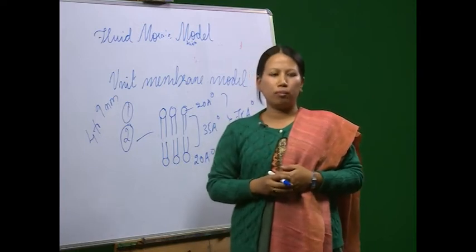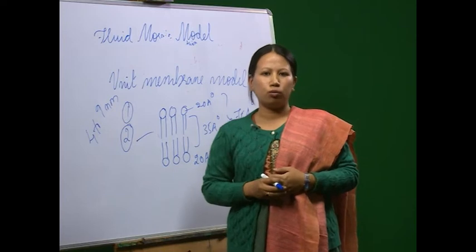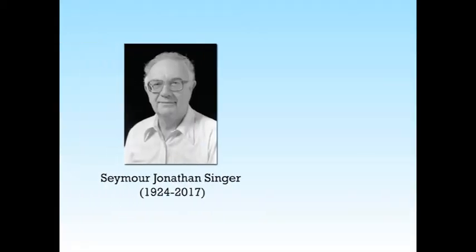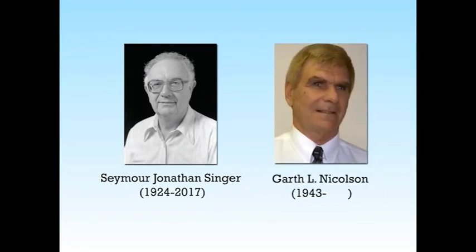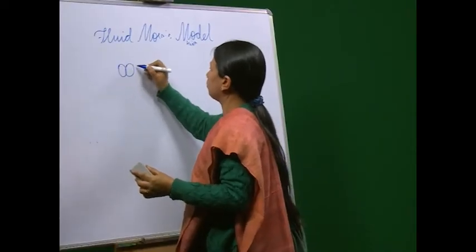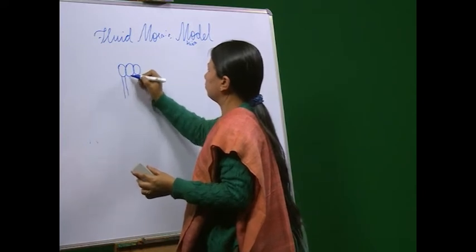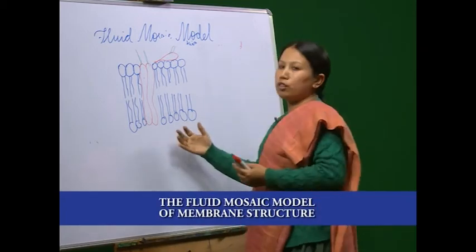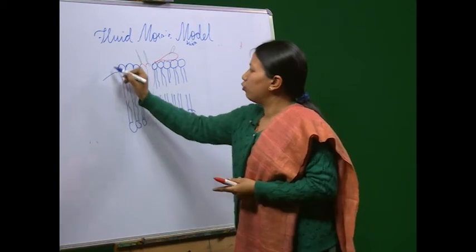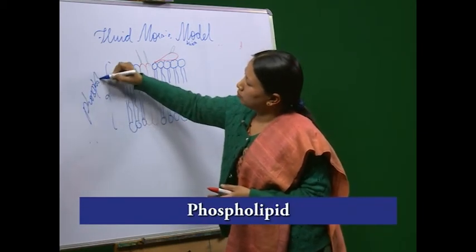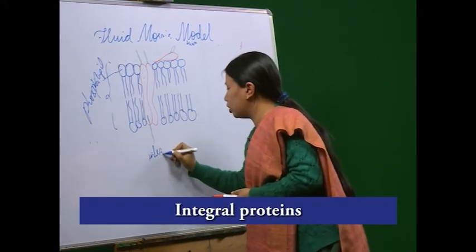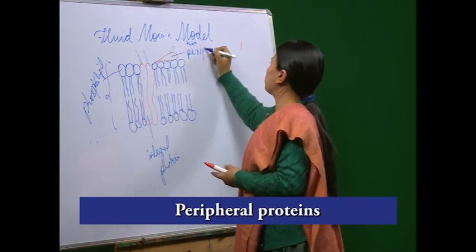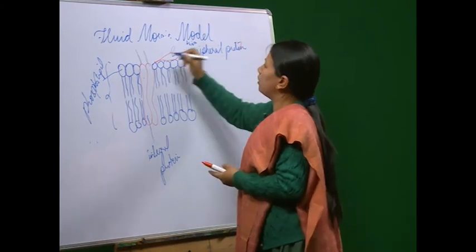Next, we'll come to the fluid mosaic model of plasma membrane, the widely accepted one. The most satisfactory model of membrane structure appears to be the fluid mosaic model postulated by Singer Jonathan Singer and Grant L. Nicholson in 1972. In this model, there are phospholipids, integral proteins, peripheral proteins, and sugars.